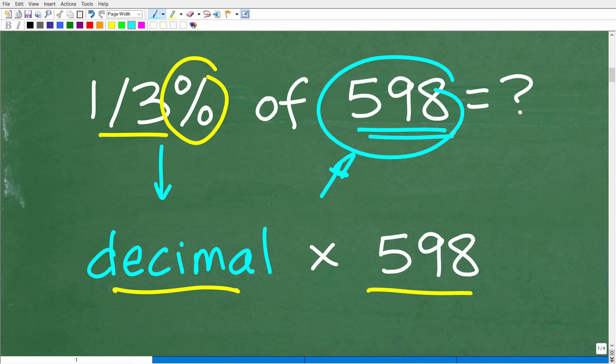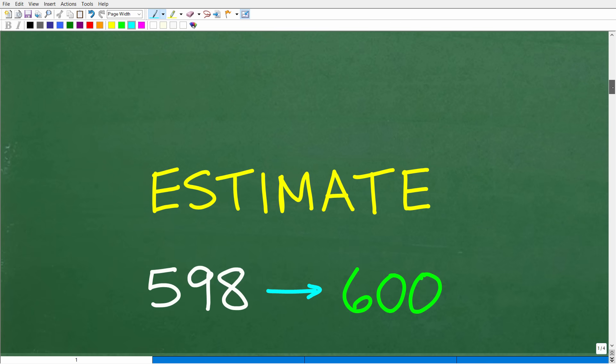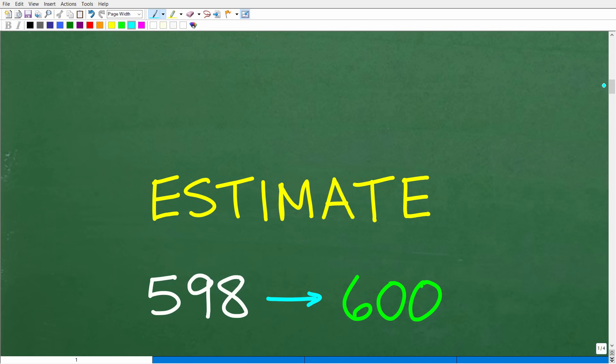Now, what number is this pretty close to? Well, if you said 600, I would say that is absolutely correct. So 598. And so instead of doing this problem using 598, let's just round up to 600. That's going to make things much easier.